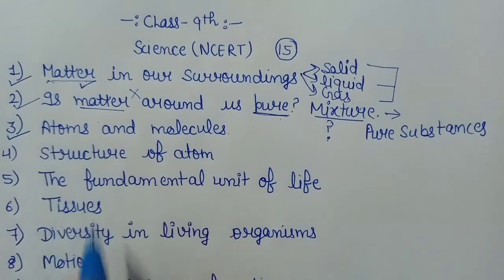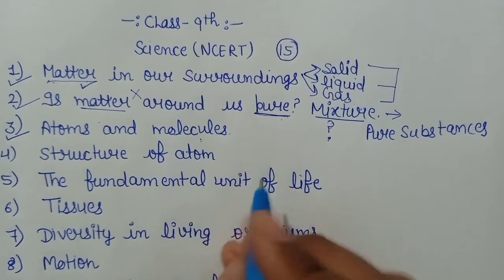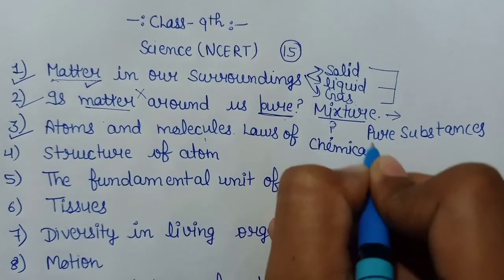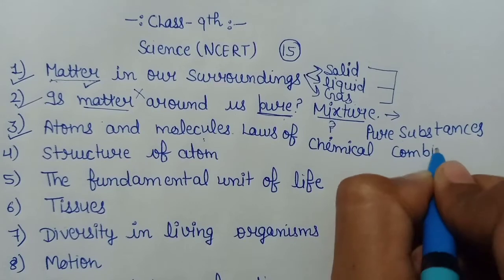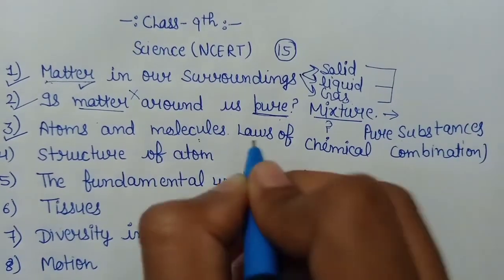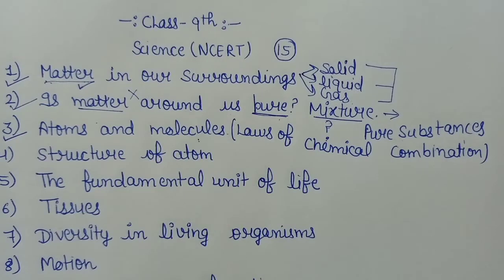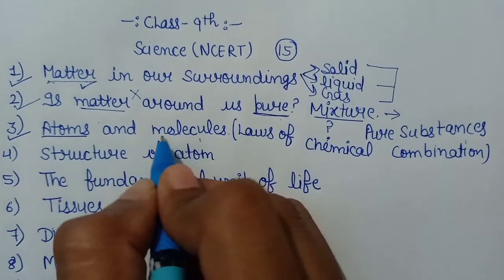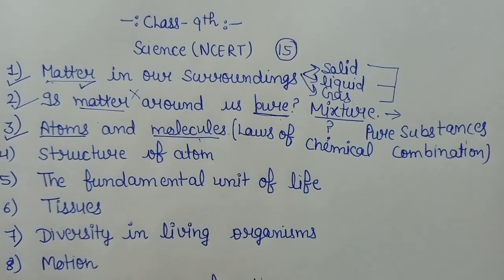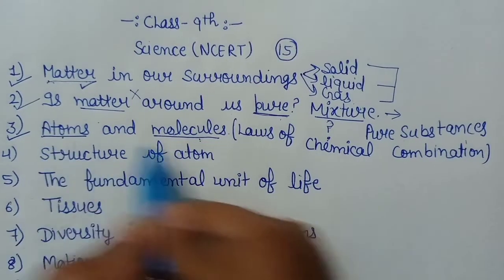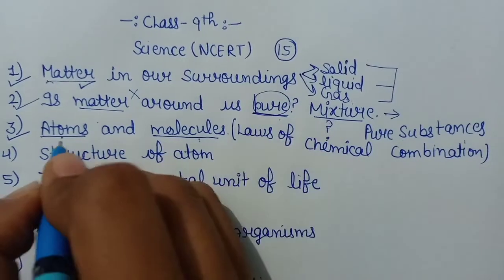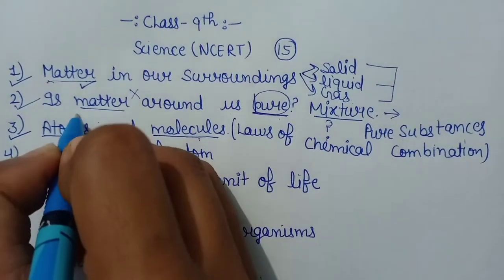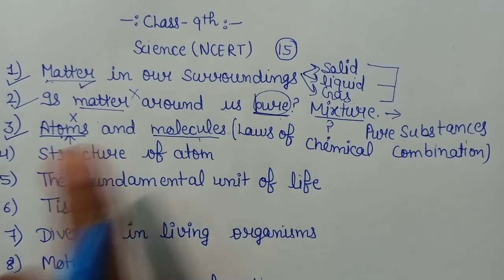Then we have chapter number 3 — Atoms and Molecules. इसमें हम पहले कुछ laws पढ़ेंगे chemical combination के। First of all we will study some laws of chemical combination because जब भी हम atom से molecule की बात करेंगे तो वहां पे कोई combination होगा जो कुछ laws को follow करेगा। Then we will move to atoms — atoms क्या है, then molecules. Atoms: element की smallest unit जो है वो atom है, लेकिन वो ऐसी unit है जो independently exist नहीं कर सकती।